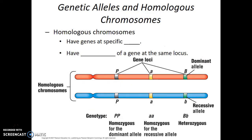Here we're looking at a homologous pair of chromosomes for a particular organism. What we see is that the location of the P gene, the A gene, and the B gene is going to be the same on both of these chromosomes. We call the location of a gene on a chromosome its locus — or, plural, we call them loci. Homologous chromosomes have alleles of a gene at the same locus, at the same location.